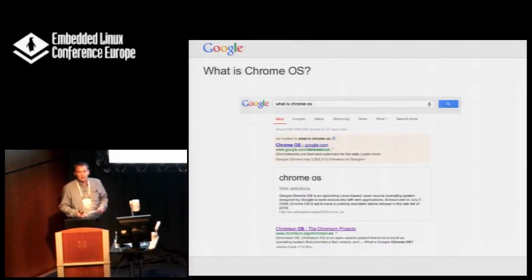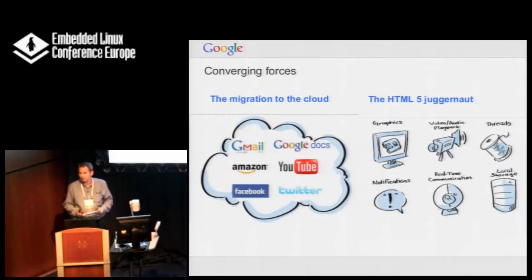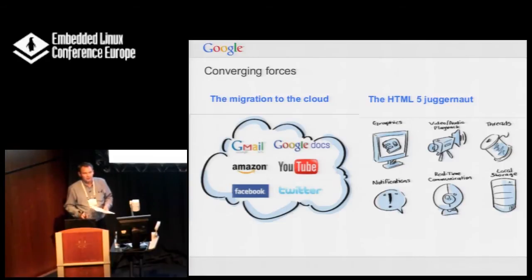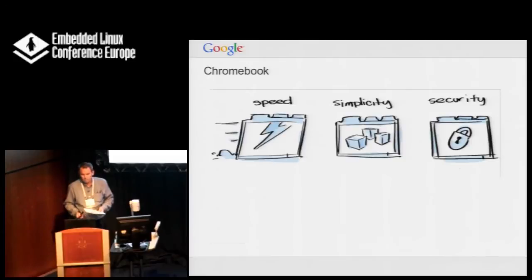What is Chrome OS? Chrome OS came about from two forces: the migration to the cloud, which we're seeing in computing all over the place, and the fact that HTML5 has more and more support for the types of computing things you want to be able to do — 3D graphics in a web browser, Canvas, video and audio, and now there are frameworks for all of those things. Chromebook is about speed, simplicity, and security.